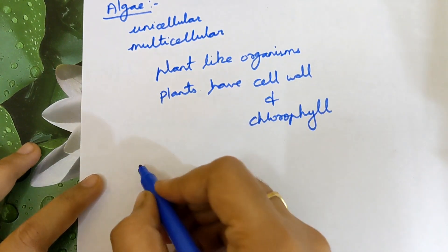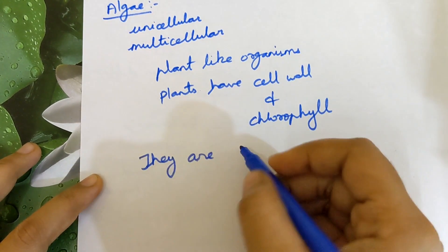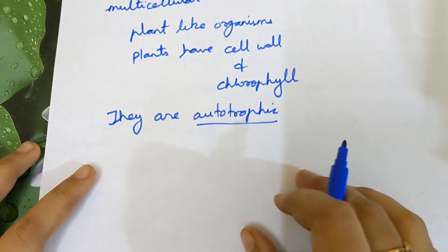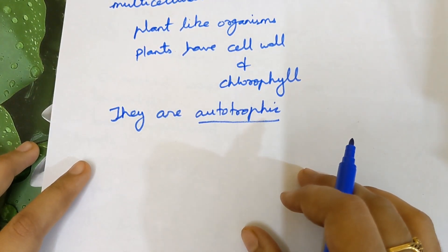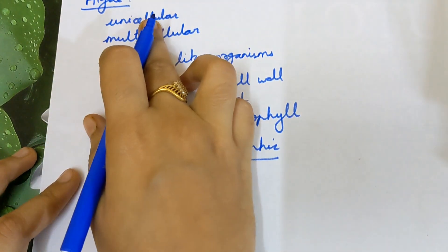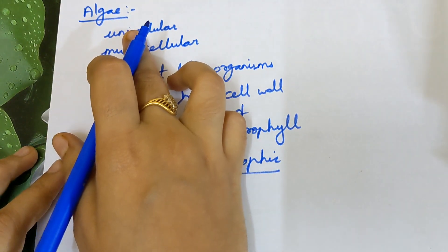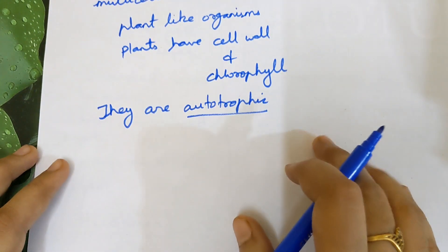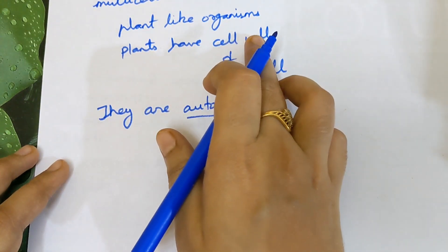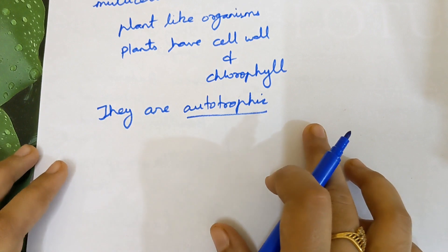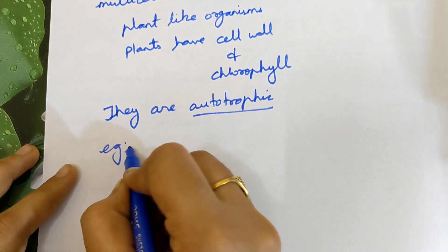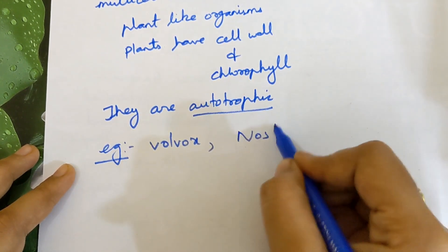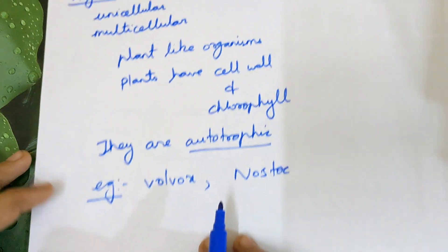Algae are autotrophic in nature. Autotrophic means they can prepare food on their own without the help of any other organism. That is why they are called plant-like organisms. Two examples of algae are Volvox and Nostoc.